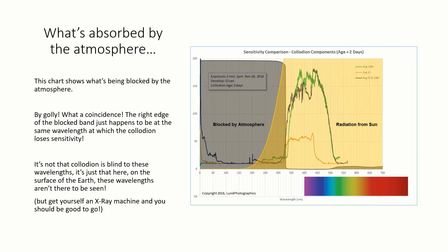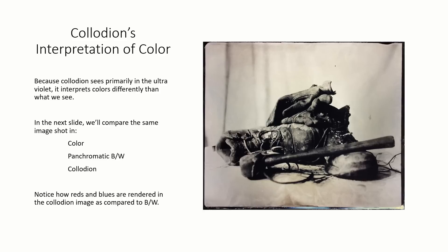So it's not that collodion is blind to shorter wavelengths. It's just that these wavelengths aren't present here on the surface of the Earth. Since half of what collodion sees is in the UV portion of the spectrum, how will this affect the tonal reproduction of my image? Let's take a look.